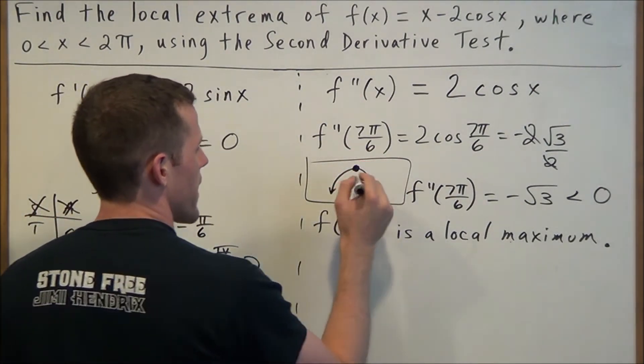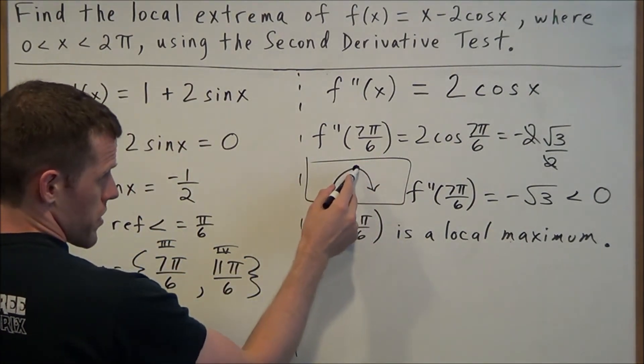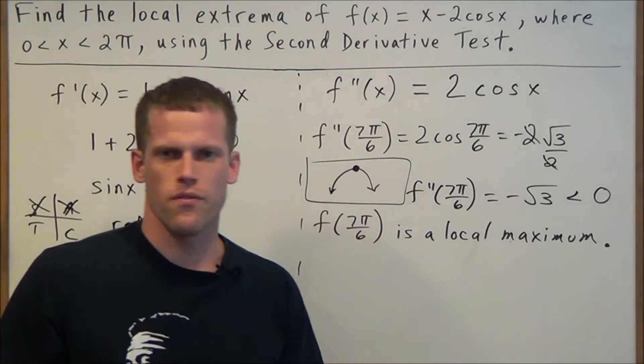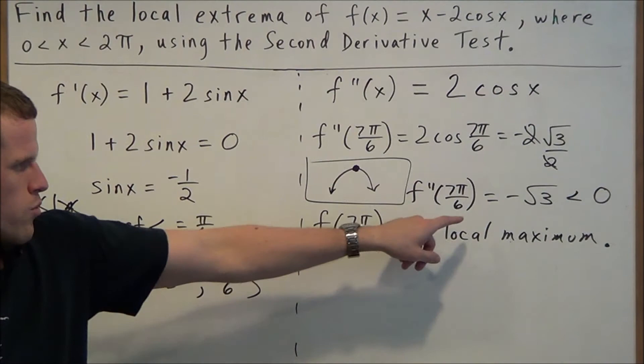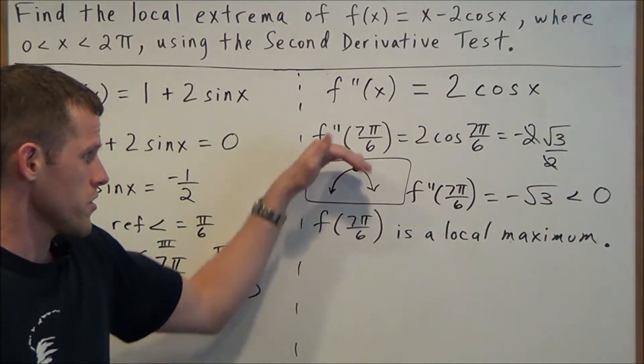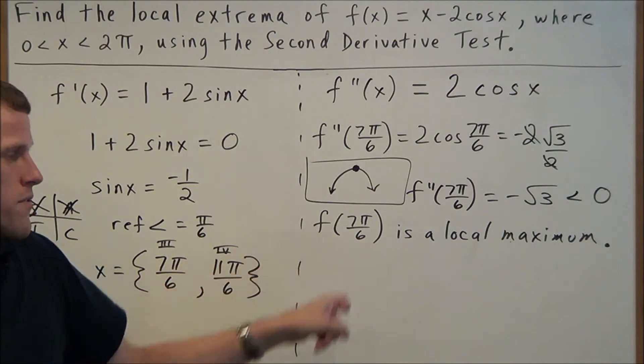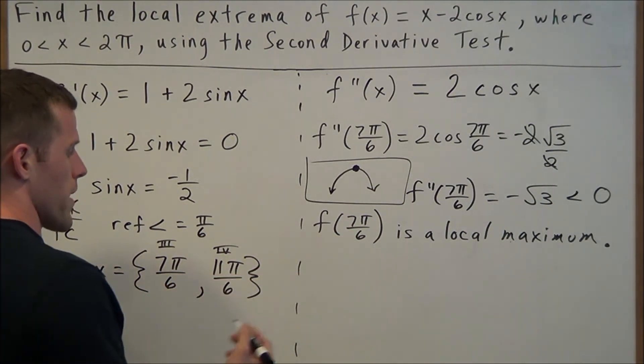And when you have a concave down curve, it's going to generate a local maximum here at the top. So that's how I remember this. You know, if I forget the theorem, I just think of what does it mean to be concave down? Your curve takes this shape, which would generate a local maximum. So that's why f(7π/6) is a local maximum.